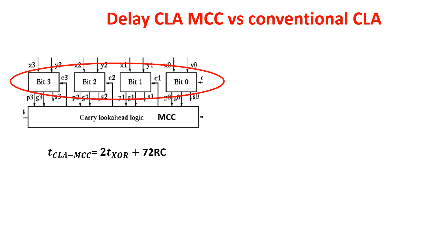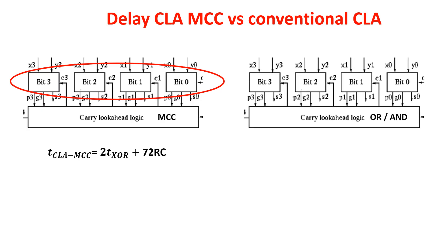We can draw the CLA MCC where the MCC logic takes 72RC time and the full adder provides propagation and generation bits in 2 T_XOR time. So the total delay of the 4-bit CLA MCC chain is 2 T_XOR plus 72RC. Comparing with the conventional CLA delay of 2 T_XOR plus 88RC, the MCC chain is faster than the conventional carry look-ahead built with AND and OR gates. Moreover, the resistances involved in the MCC are smaller than those in the conventional CLA. These are raw approximations, but they give an idea of how delays are calculated.